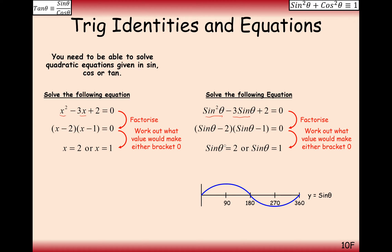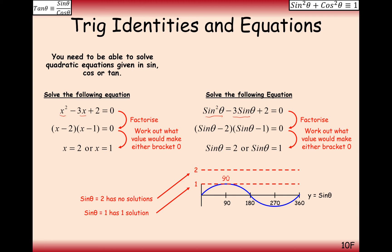So either sine θ = 2 or sine θ = 1. Sine θ = 2 has no solutions because the sine graph is bounded between 1 and minus 1. Sine θ = 1 gives one solution in 0 to 360 at θ = 90°.